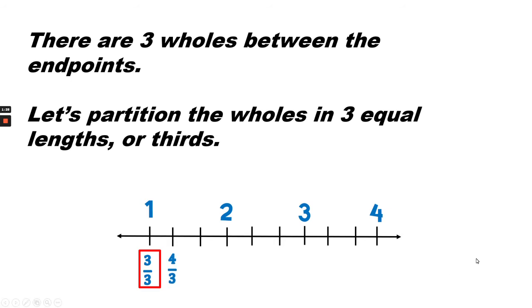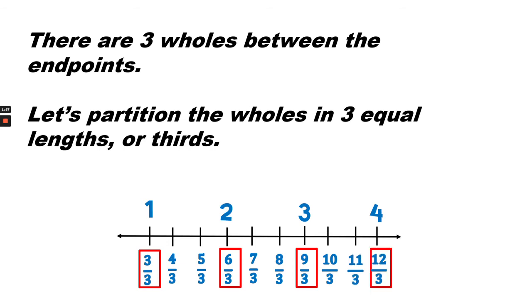So the next tick mark would be four-thirds, five-thirds, and then two which is equivalent to six-thirds, seven-thirds, eight-thirds, nine-thirds which is equivalent to three, ten-thirds, eleven-thirds, and twelve-thirds which is equivalent to four.